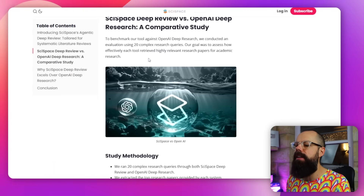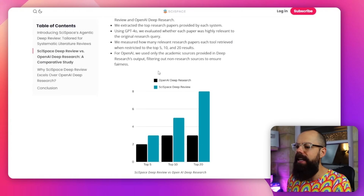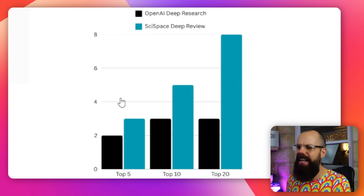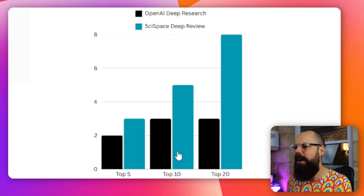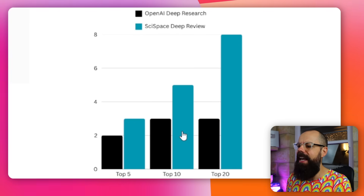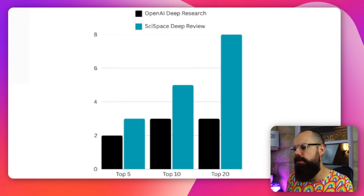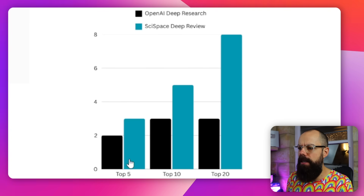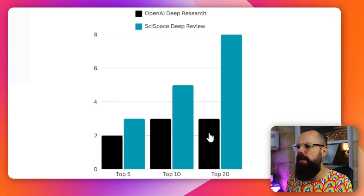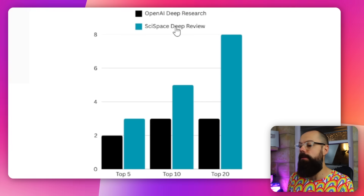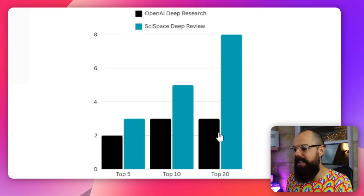In a comparative study — and SciSpace, label your axes, C- for this one — essentially what this is telling you is that SciSpace finds more relevant papers. If it has to look at the top 5, top 10, and top 20 papers, OpenAI Deep Research only finds about 2 to 3 papers, whereas SciSpace Deep Review finds up to 8 in the top 20.